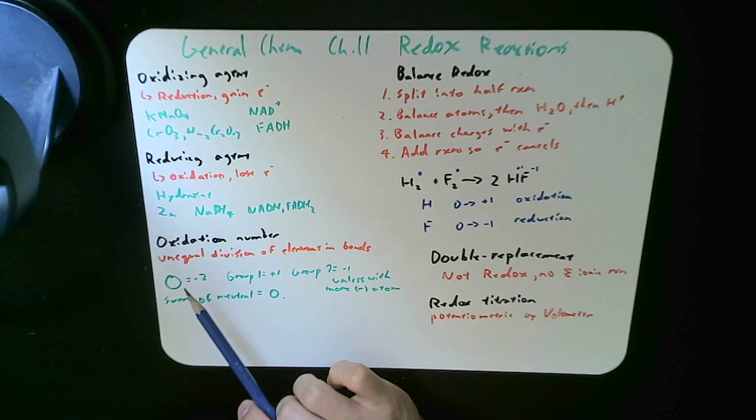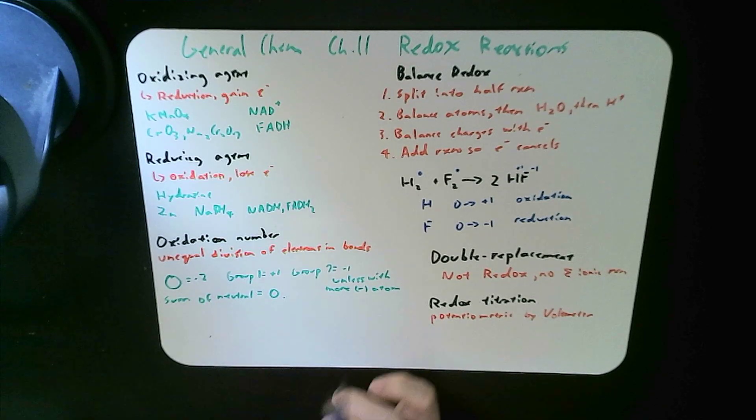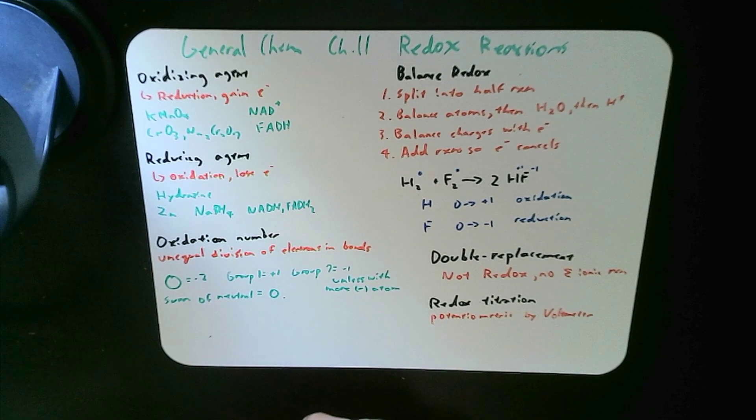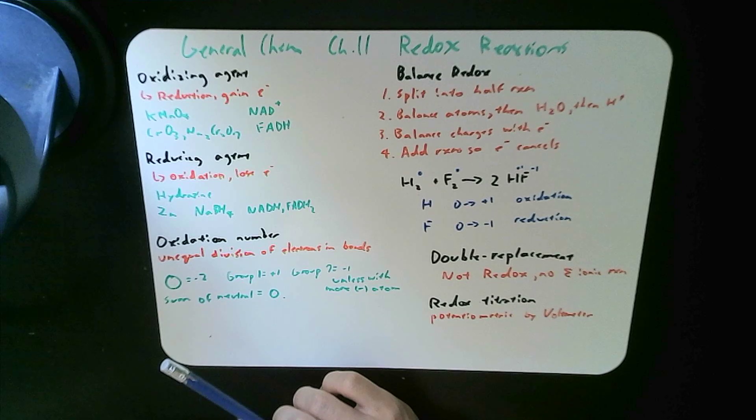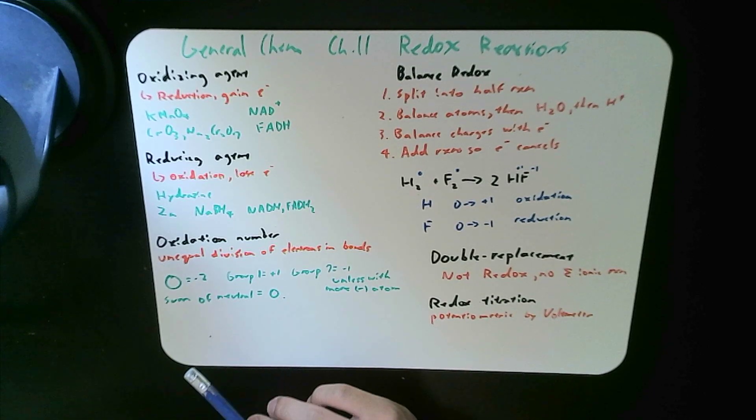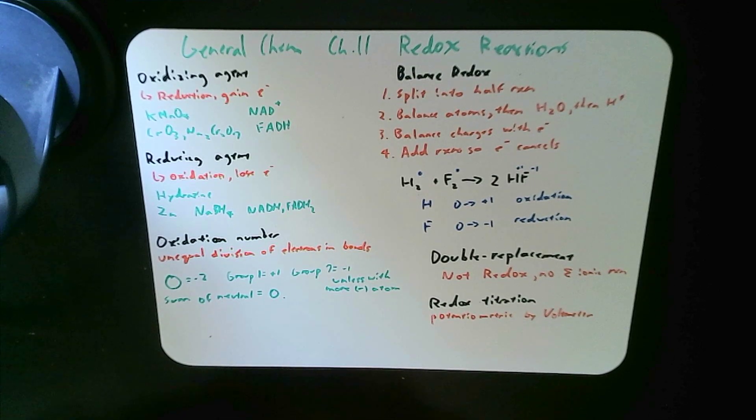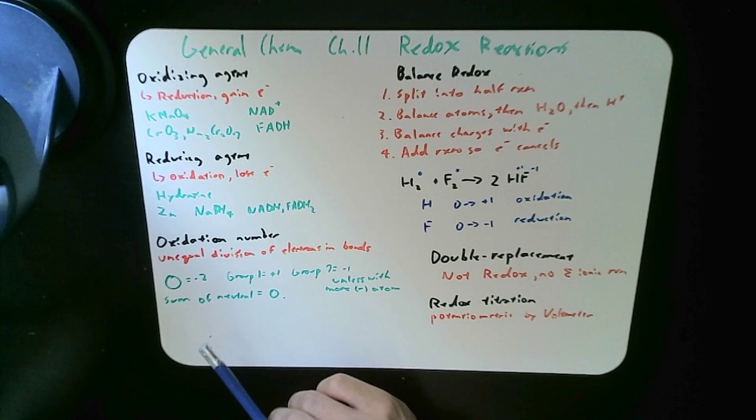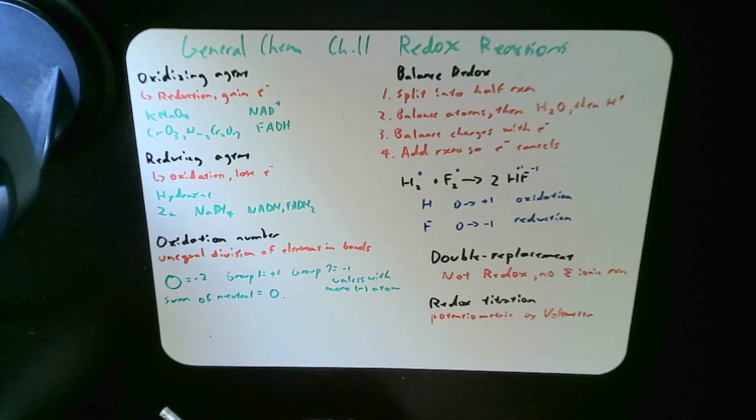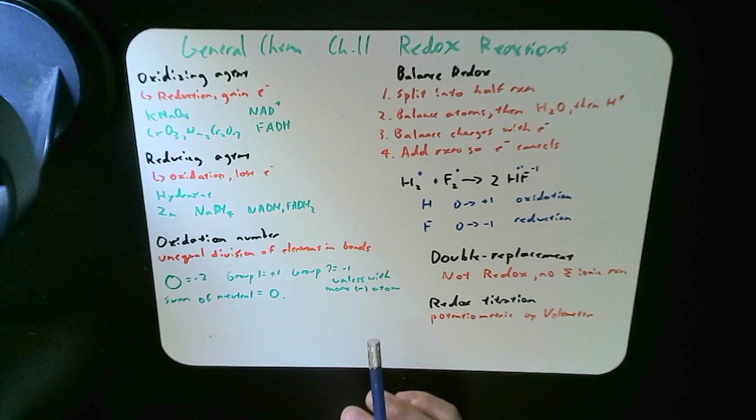Oxidation number is basically the unequal division of electrons in bonds. This is opposite or is different from formal charges, which assumes equal division of electrons in bonds. Oxidation number usually is negative 2 in oxygen, and everything else surrounds that.